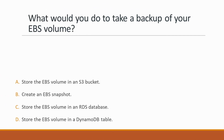Next question: What would you do to take a backup of your EBS volume? Options: A. Store the EBS volume in an S3 bucket, B. Create an EBS snapshot, C. Store the EBS volume in an RDS database, D. Store the EBS volume in a DynamoDB table. Correct answer is option B, create an EBS snapshot, because you can back up data on your Amazon EBS volumes to Amazon S3 by taking point-in-time snapshots. Snapshots are incremental backups, saving only blocks that changed since the most recent snapshot, minimizing time and storage costs.